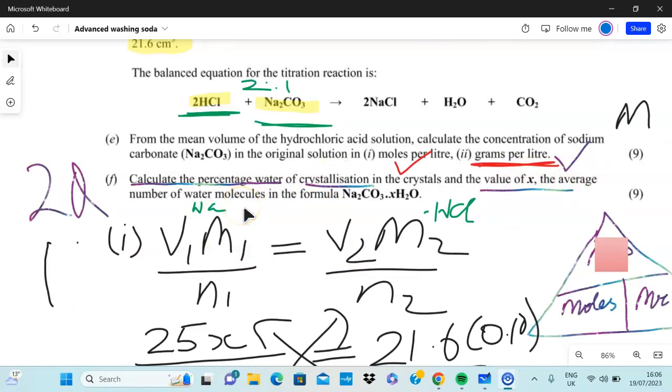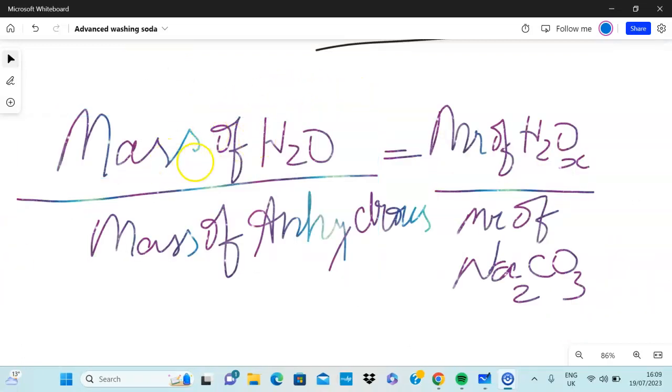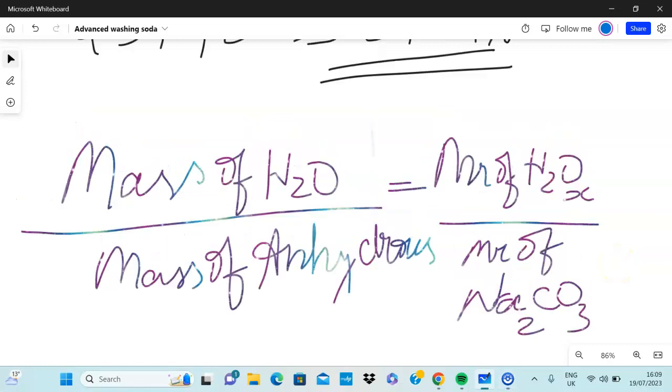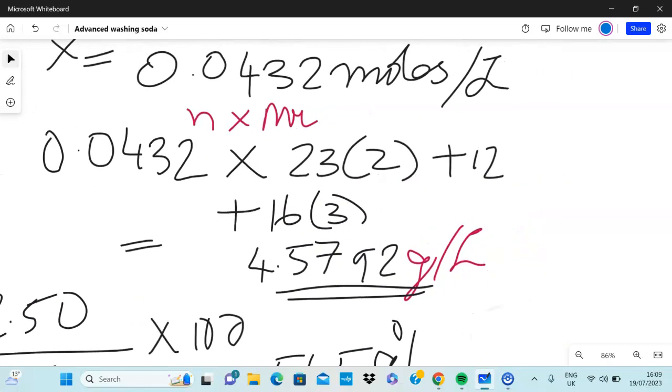Next up you have to find the value of X, the average number of water molecules in that formula. The whole reason why I made this video was to share this formula. If you know this particular formula I'm about to show you, you will not make any mistakes. Golden formula: this is it. That's mass of H2O divided by mass of anhydrous whatever, so in this case it's sodium carbonate, equals the mass - the molecular mass of H2O times X - divided by the molecular mass of Na2CO3.